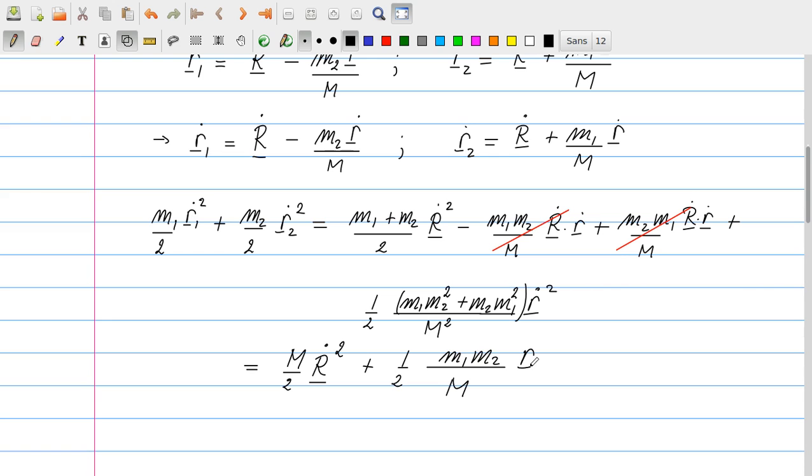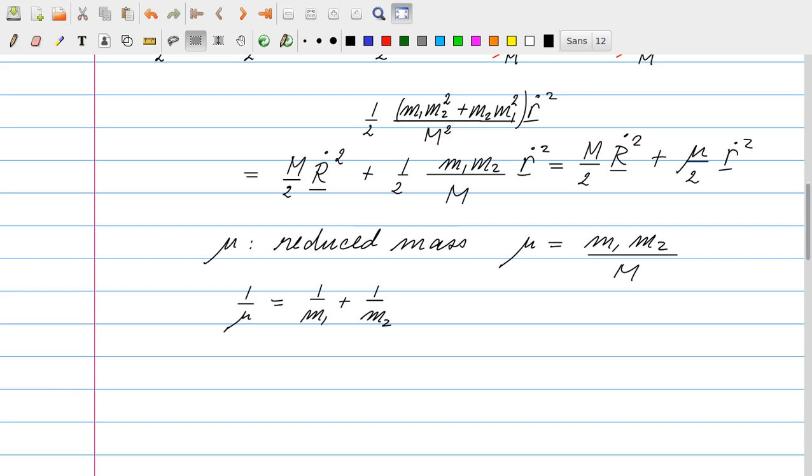And so what I'm left with is m1 m2 over M r dot squared, and I'm going to write this as follows. The first term is simply copied, and the second term is written in the form mu over 2 r dot squared. Mu is known as reduced mass, so it's defined as this m1 m2 over M, capital M, and you can easily recall what it is by remembering 1 over mu is 1 over the little m1 plus 1 over the little m2.